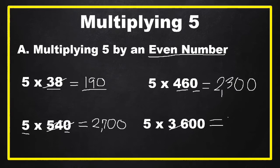Another example: five times 3,600. Get one half of 36, which is 18. Then copy two zeros to the right side of 18, then another zero because we multiplied by five. So our answer is 18,000.